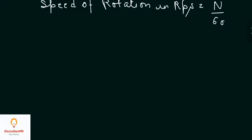The average induced EMF is given by Faraday's law of electromagnetic induction, which states that whenever a conductor cuts the magnetic flux, a dynamically induced EMF is produced. The induced EMF is directly proportional to the rate of change of flux linkage, given by N times d-phi by dT.